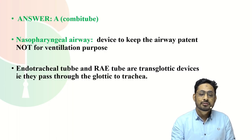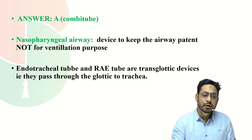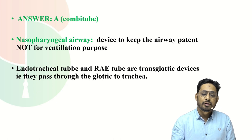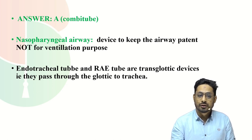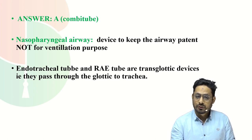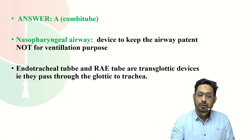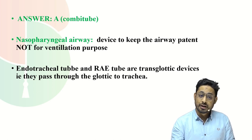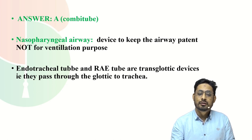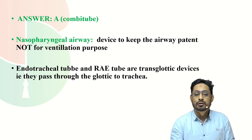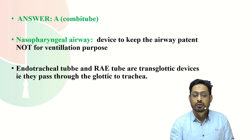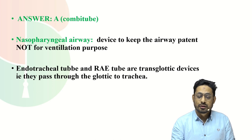The answer for the above question is A — combi tube. Combi tube is a supraglottic device placed above the level of the vocal cord. It has two balloons: one lies at the level of the trachea and another lies above the vocal cord. The endotracheal tube is placed below the level of the vocal cord, so it is not a supraglottic device; it is an intraglottic device and is therefore excluded.